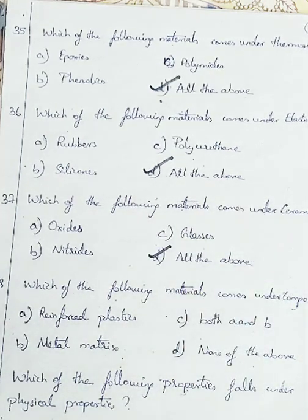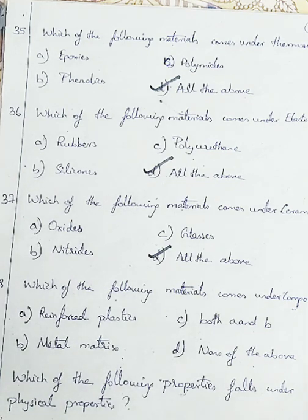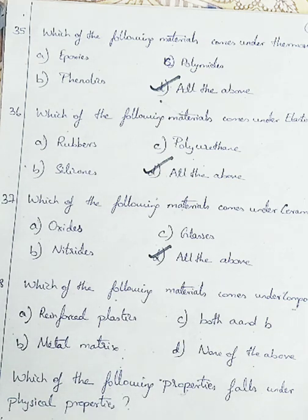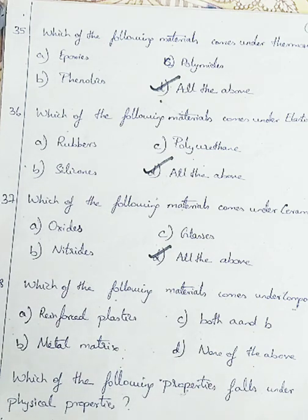Question number 38: which of the materials comes under composites? Option A: reinforced plastics, Option B: metal matrix, Option C: both A and B, Option D: none of the above. Composites have two categories: reinforced plastics and metal matrix. So we will be going with Option C, both A and B.